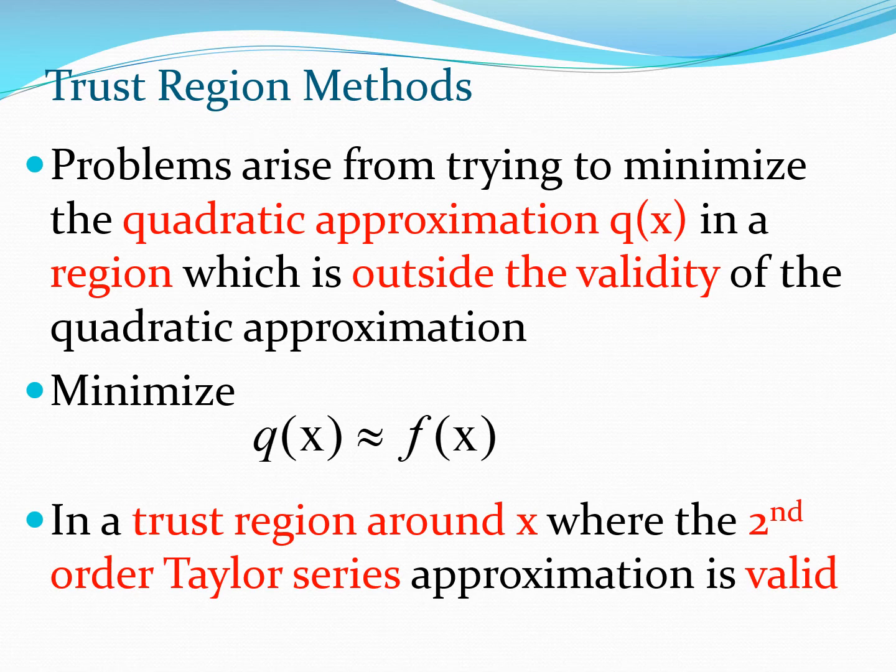Now problems typically come when you try to minimize this quadratic function q of x in a region which is beyond the validity of this approximation. So essentially in all these type of problems we are creating a function q of x which is a quadratic which approximates the actual function f of x which is the function we are trying to minimize. And this minimization is done in a trust region around x where this particular quadratic Taylor series expansion which you have taken is valid. So essentially that is all the trust region method tries to do.